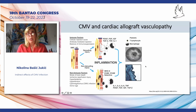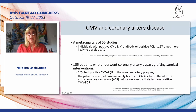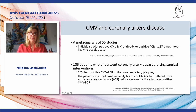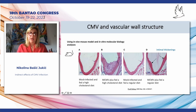In allograft vasculopathy after heart transplantation, CMV has a clear role in development of changes on the blood vessel wall, clearly associated with injury to the graft, and is included among non-immune factors associated with cardiac allograft vasculopathy. In a meta-analysis of 55 studies, individuals with positive CMV IgG antibody or positive PCR had a 67% higher chance of developing coronary disease. Also, in 105 patients undergoing coronary artery bypass grafting or other surgical intervention, 26% had positive CMV PCR in coronary artery blocks.